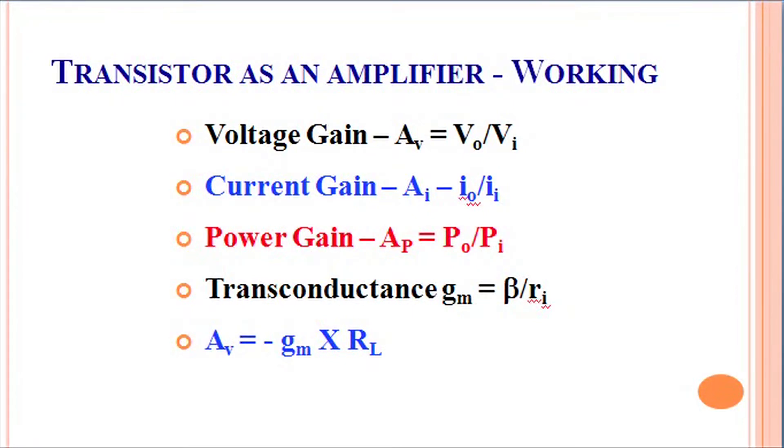The term transconductance is the ratio beta to the input resistance and the net voltage gain can be calculated as minus of the transconductance multiplied by the load resistance. We can carry out this expression by making the calculations in a simple way.